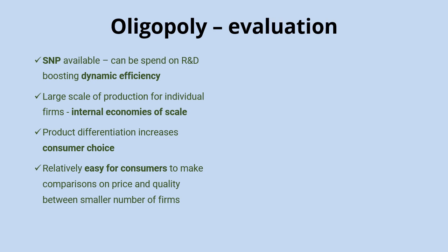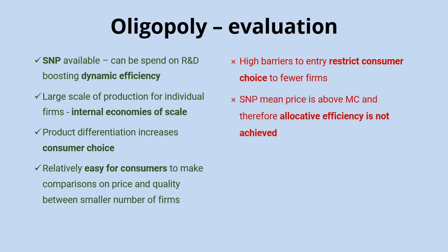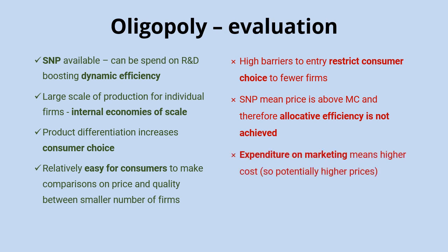In terms of disadvantages: while product differentiation increases choice between products, there's actually less choice between firms, since the number of firms in oligopoly is small. Also, supernormal profits and high prices mean price is above marginal cost, so allocative efficiency is not achieved — allocative efficiency requires price equal to marginal cost, and in the kinked demand curve diagram we can see price is above marginal cost.